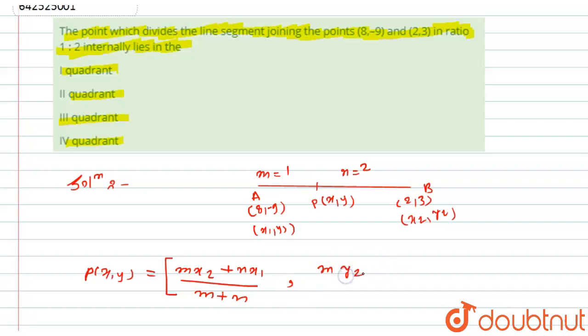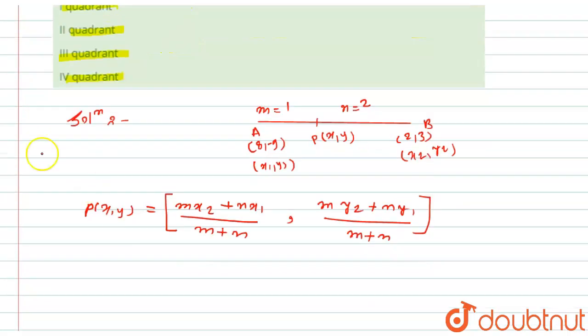Now I will simply put the values from the upper side. Here I will get m is 1, x₂ is 2, plus n is 2, x₁ is 8, divided by m + n, which is 1 + 2.